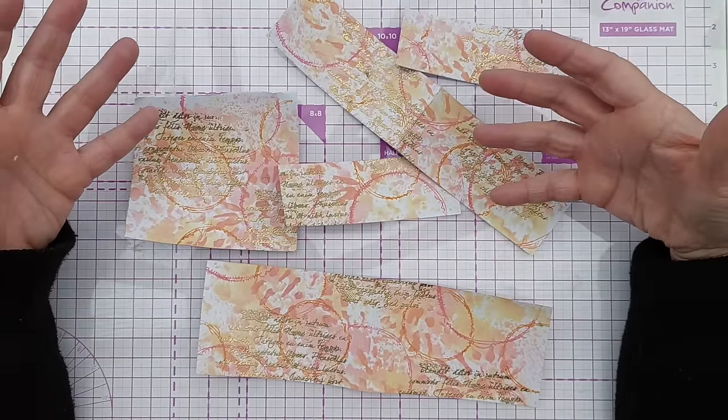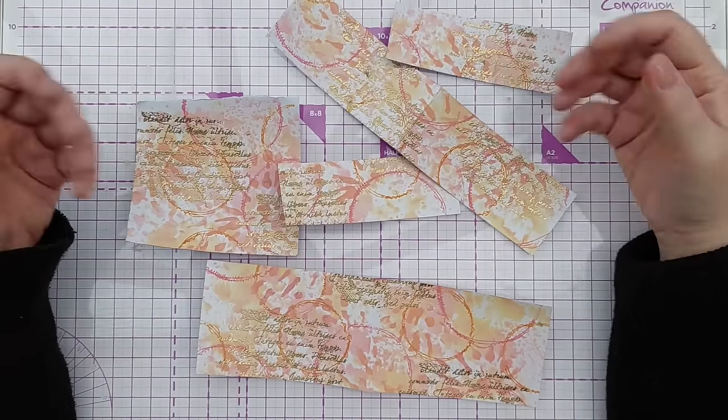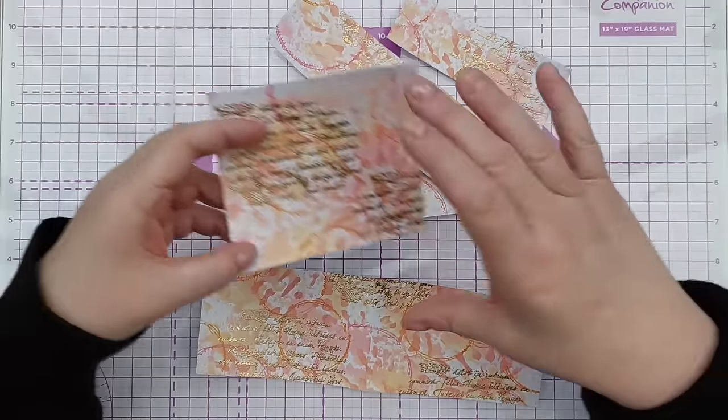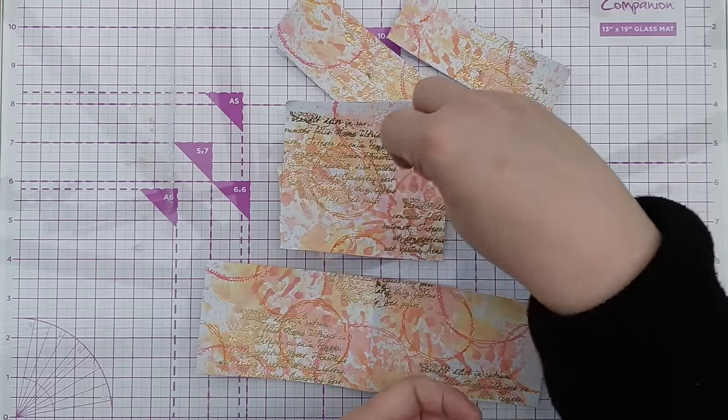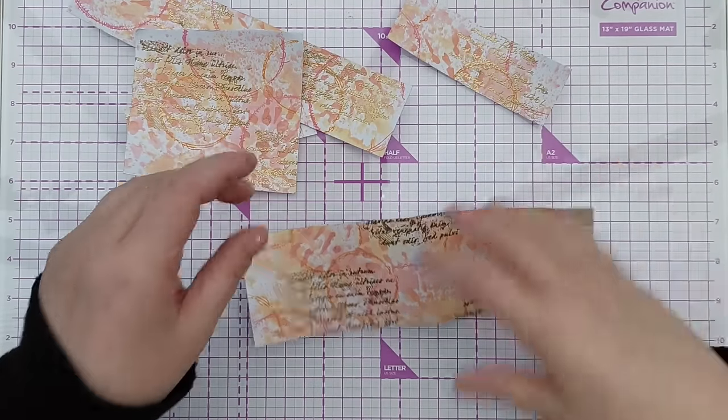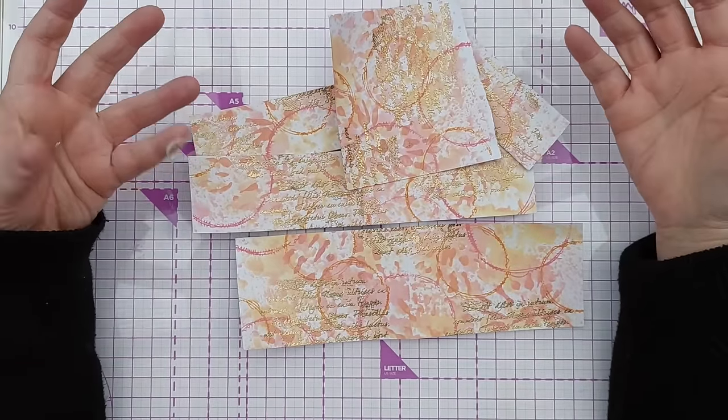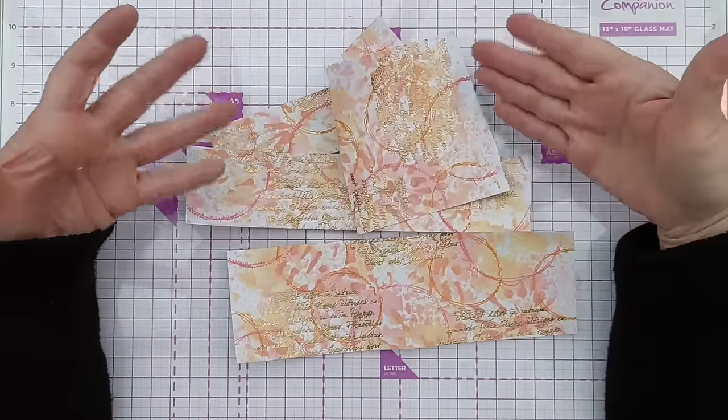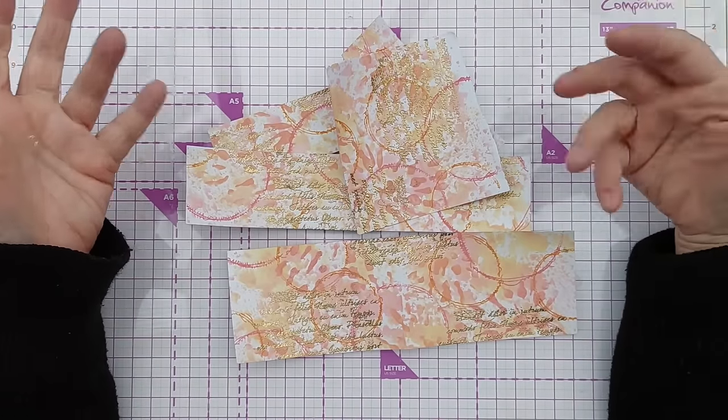So already I'm thinking I could cut a square out of this and use that as a panel and put a die cut on top of it, or I could die cut some hearts out of this or some flowers out of this and do something with those. And you can do any colors, you could do a whole rainbow, you could do warm colors like this one or you could do something with blues and greens or purples and pinks.